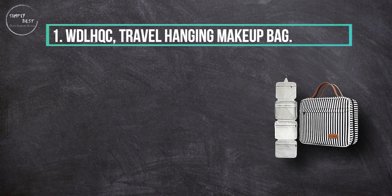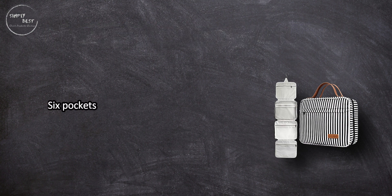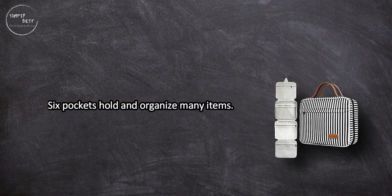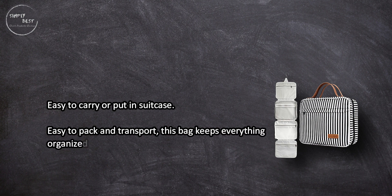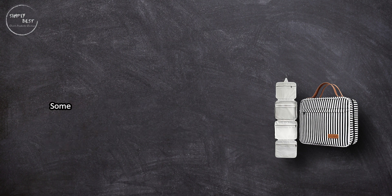At number one: WDLHQC travel hanging makeup bag. Six pockets hold and organize many items, hook for hassle-free hanging, easy to carry or put in suitcase. Easy to pack and transport, this bag keeps everything organized. Some buyers questioned quality of material and stitching.